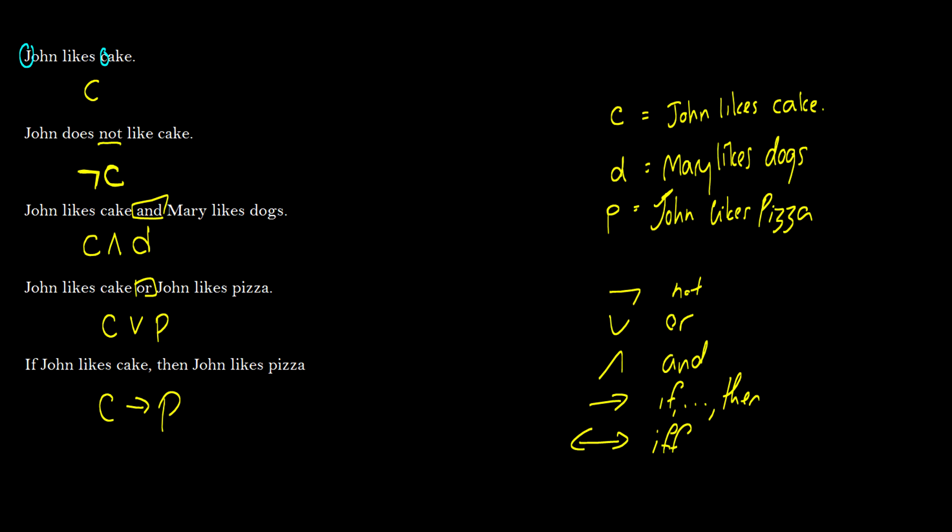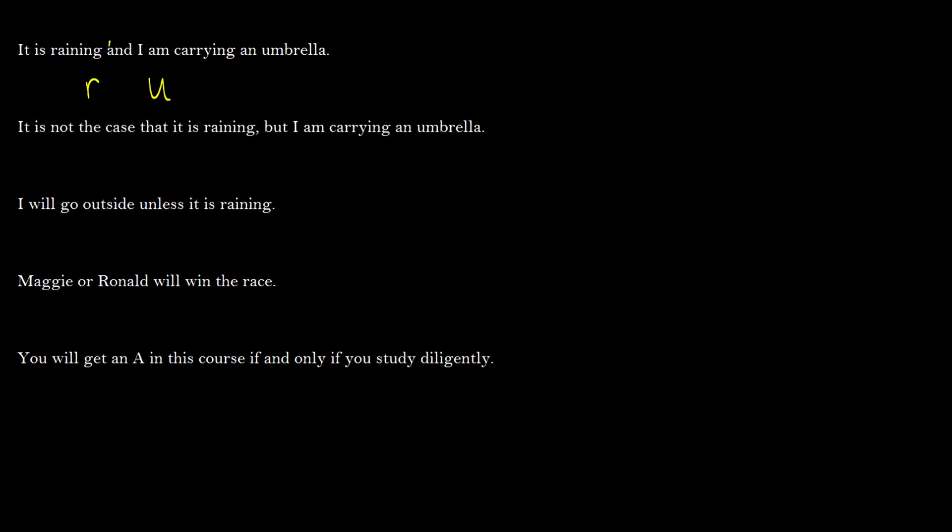Now we'll get a little harder. We have 'It is raining and I am carrying an umbrella.' Let's call R for 'it is raining' and U for 'I am carrying an umbrella.' They are joined by conjunction AND, so we write R ∧ U.